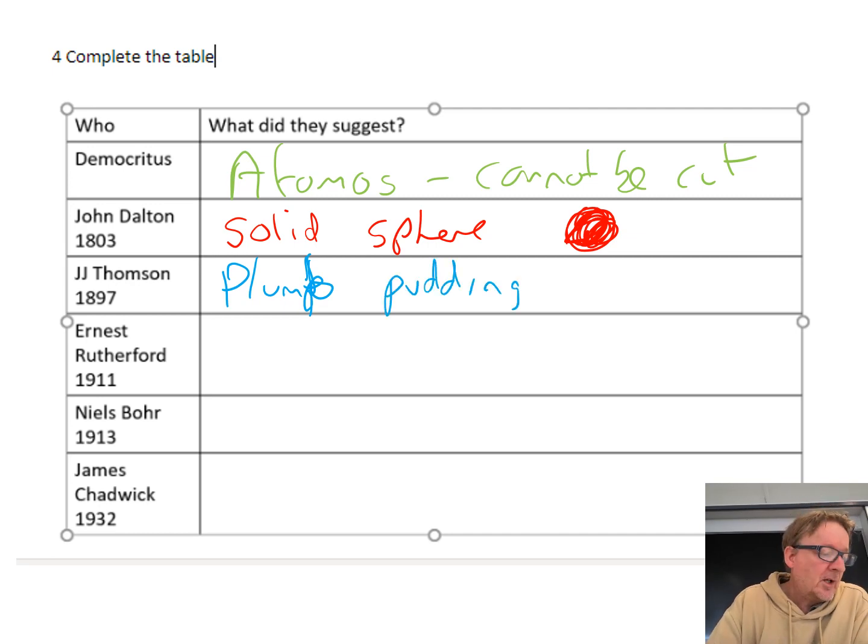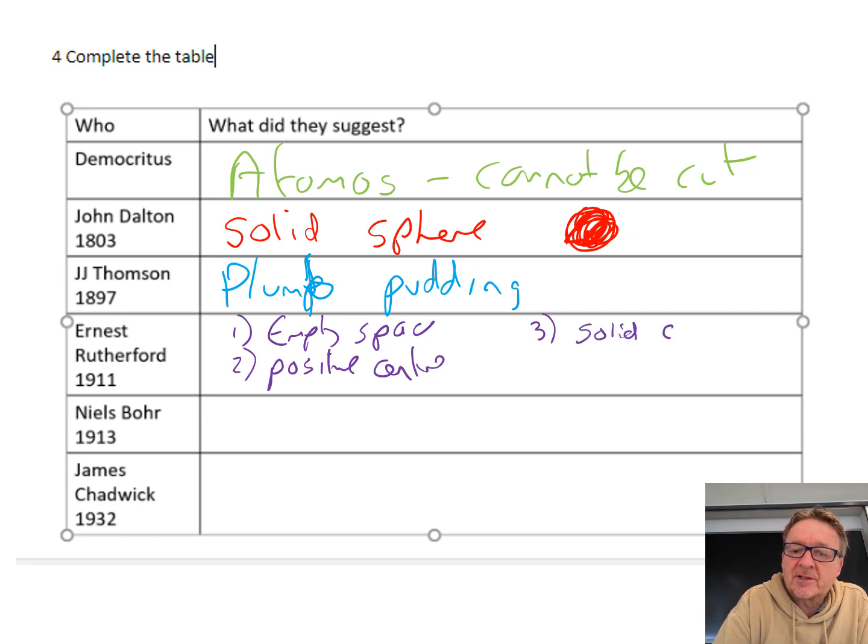Rutherford came up with three ideas: number one, most of the atom was empty space; number two, there was a positive centre; and number three, there was a solid center.